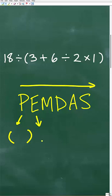This stands for exponents, but basically you can think of this as a power. So if you have 2 to the third power, this little 3 up here is the exponent to this power.